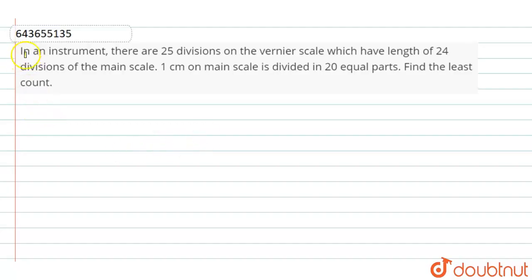Hello dear students, the question is: In an instrument, there are 25 divisions on the vernier scale which have length of 24 divisions of the main scale. 1 centimeter on the main scale is divided into 20 equal parts. Find the least count.